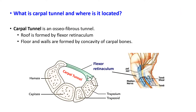What is carpal tunnel and where exactly is it located? Carpal tunnel is an osseofibrous tunnel — osseo means bones, in this case these are carpals, and a fibrous structure which is flexor retinaculum. In these two pictures, this small space is the carpal tunnel. The roof of the carpal tunnel is formed by this fibrous band, which is nothing but condensation of deep fascia — this is flexor retinaculum because it is present on the flexor surface.